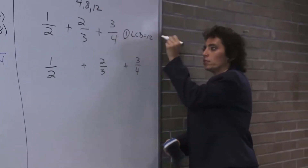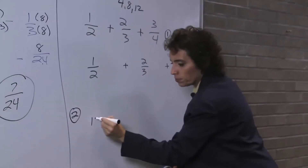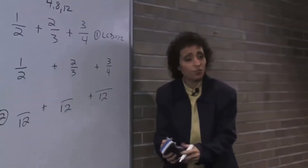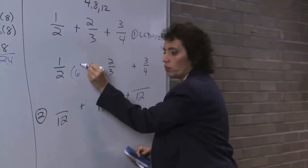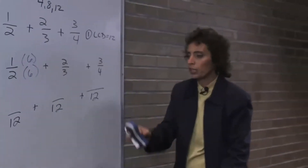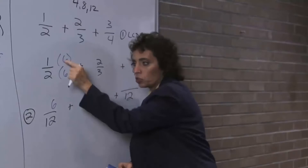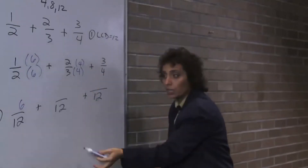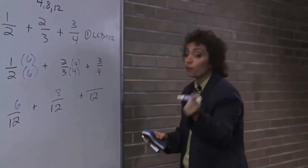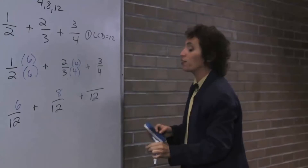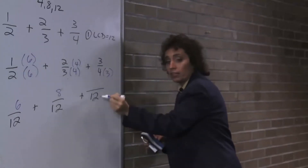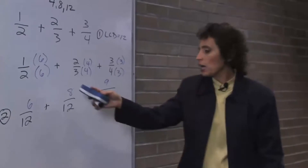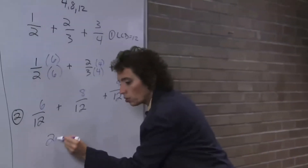That's step 1. Step 2 — we're going to get them all to be twelfths. What do I multiply the 2 by to get to 12? That's 6. Whatever I do to the bottom, I do to the top. 6 times 1 is 6 — we're multiplying by a form of 1. What do I multiply the 3 by to get to 12? That's 4. Whatever I do to the bottom, I do to the top — that's 8 twelfths. 4 times what number is 12? That's 3. Whatever I do to the bottom, I do to the top — that's 9 twelfths. So 6 plus 8 plus 9 — that's 6 plus 8 is 14, plus 9 is 23 twelfths.